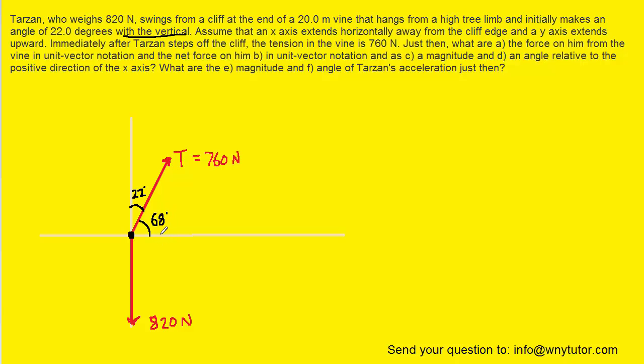Now in parts A and B we are being asked to calculate the force on him from the vine in unit vector notation, and then also the net force in unit vector notation. Now starting with part A, the force on him from just the vine we can write as follows.